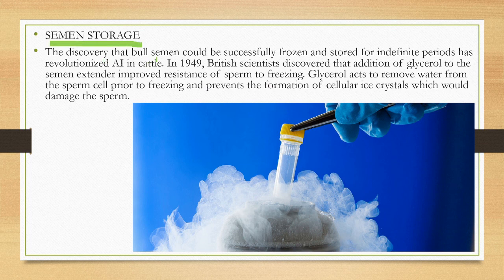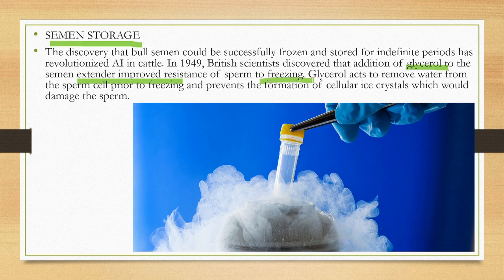The discovery that bull semen could be successfully frozen and stored for a definite period revolutionized artificial insemination in cattle. A British scientist discovered that the addition of glycerol extends and improves the resistance of sperms to freezing. Glycerol acts to remove water from the sperm cells prior to freezing and prevents the formation of cellular ice crystals, which would damage the sperms.